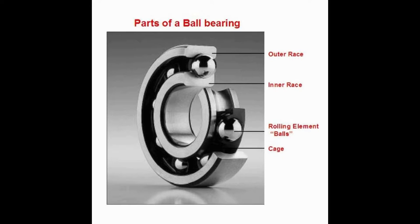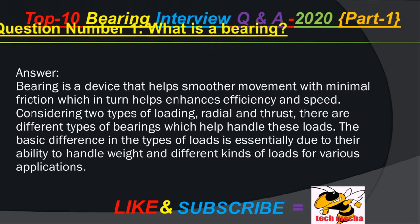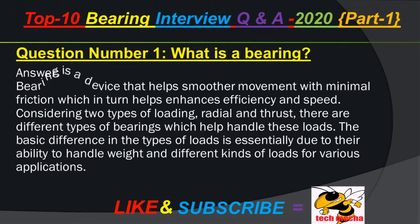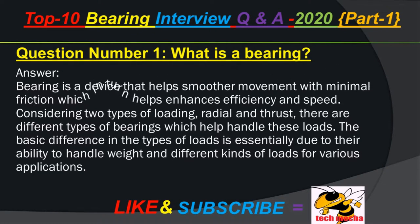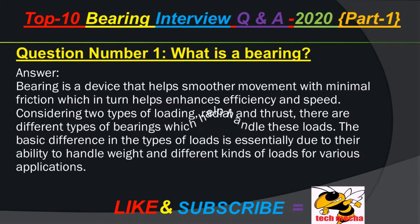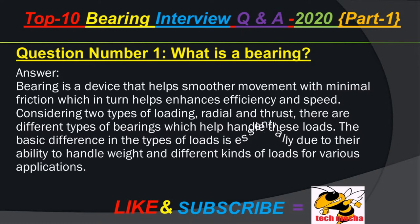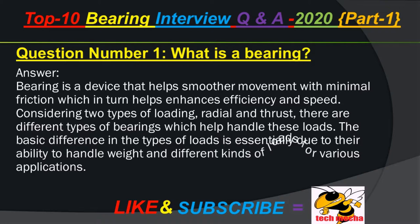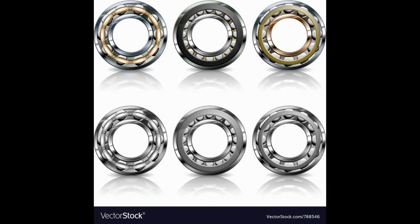Bearing is a device that helps smooth movement with minimal friction, which in turn helps enhance efficiency and speed. Considering two types of loading — radial and thrust — there are different types of bearings which help handle these loads. The basic difference in the types of loads is due to their ability to handle weight and different kinds of loads for various applications.